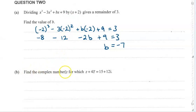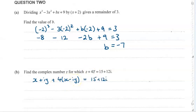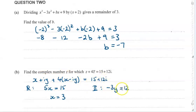Next, find the complex number z that makes this true. So let's write z as x plus iy. If I add on 4 times the conjugate of z, I'm adding 4 times x minus iy and setting that equal to 15 plus 12i. Considering just the real terms, x must be 3. For the imaginary, minus 3y has to make 12, so y is minus 4. Putting x and y back together, z is 3 minus 4i.